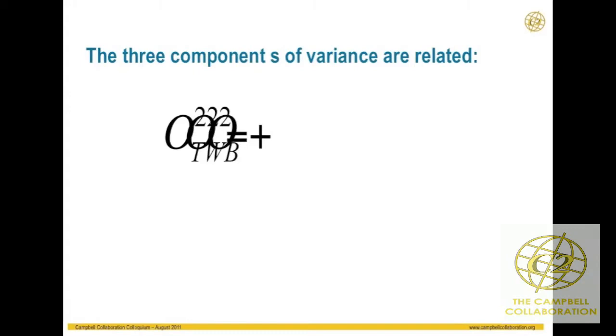This is very important: our total variation — the variance of each individual observation from their respective group mean — equals our within-group cluster variation plus the between-means variation.